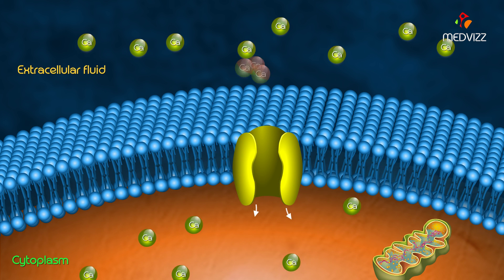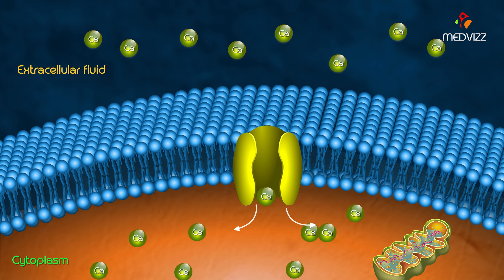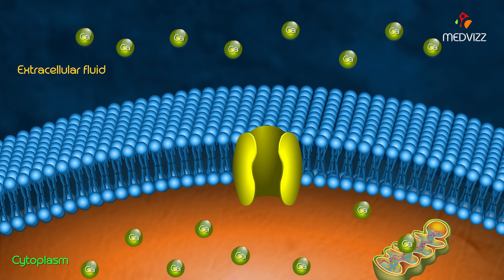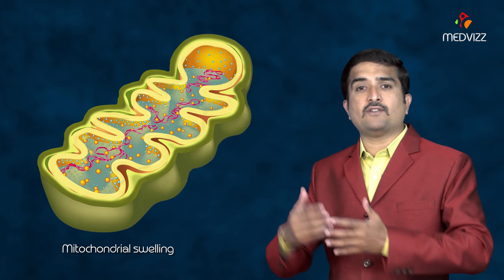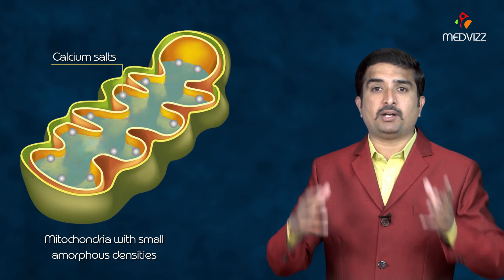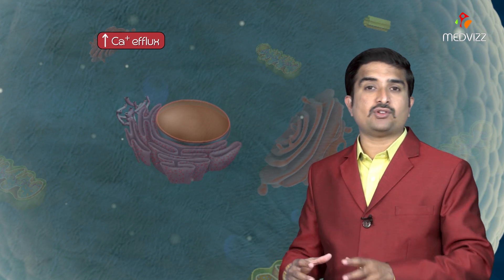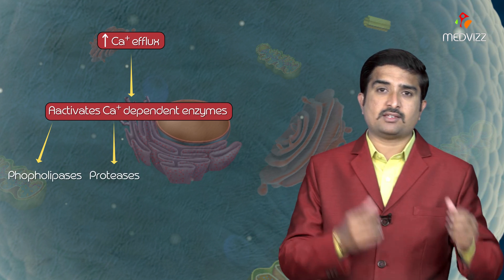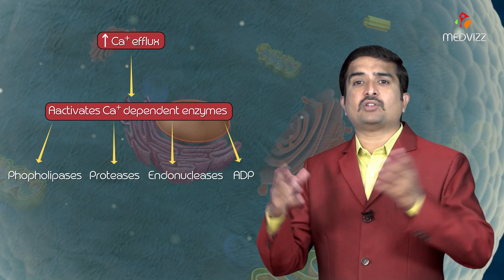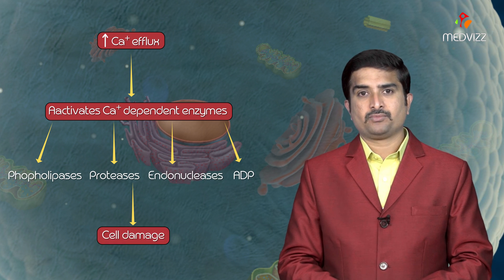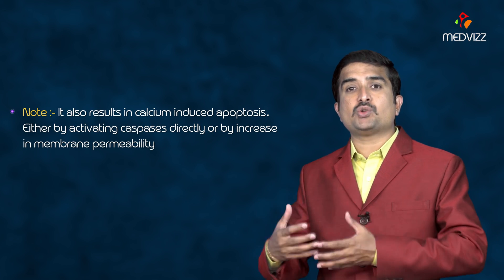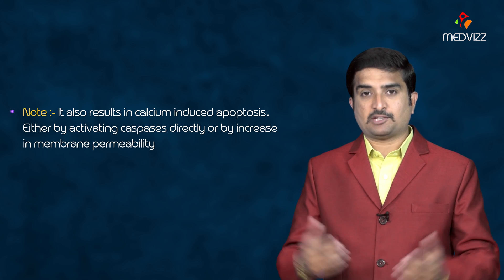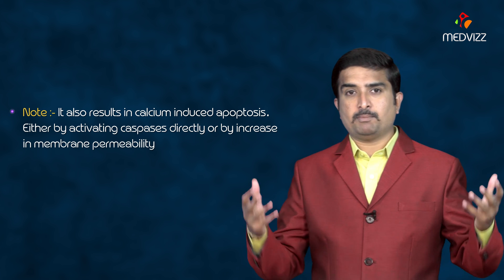The second consequence is calcium pump failure, causing excess influx of calcium ions due to membrane damage. Calcium influx into the cell, particularly into the mitochondria, causes mitochondrial swelling and deposition of phospholipid-rich amorphous densities. Increased calcium efflux from mitochondria into the cytosol activates calcium-dependent enzymes — phospholipases, proteases, and endonucleases — and ADP contributes to cell damage. This also results in calcium-induced apoptosis, either by activating caspases directly or by increasing membrane permeability.